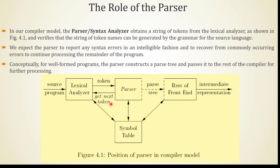The output of the parser is a parse tree, and that parse tree will be given to the rest of the front end — that means the semantic analyzer and intermediate code generator. We expect the parser to report any syntax errors in an intelligible fashion and to recover from commonly occurring errors to continue processing the remainder of the program. Conceptually, for well-formed programs, the parser constructs a parse tree and passes it to the rest of the compiler for further processing.